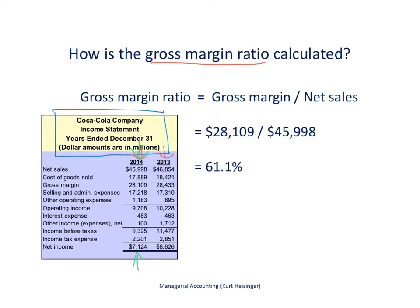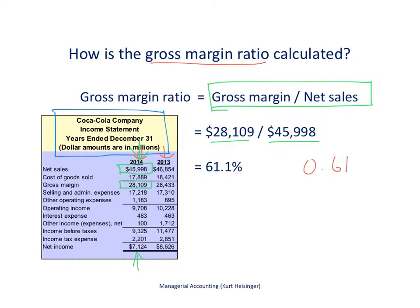For the gross margin ratio, the formula is gross margin divided by net sales. This tells us for each dollar of net sales, how much gross margin is earned. Gross margin here is $28,109 million, and we divide that by net sales of $45,998 million. That gives us a gross margin ratio of 0.611, or 61.1%. So for every dollar in net sales, Coca-Cola generated about 61 cents in gross margin.